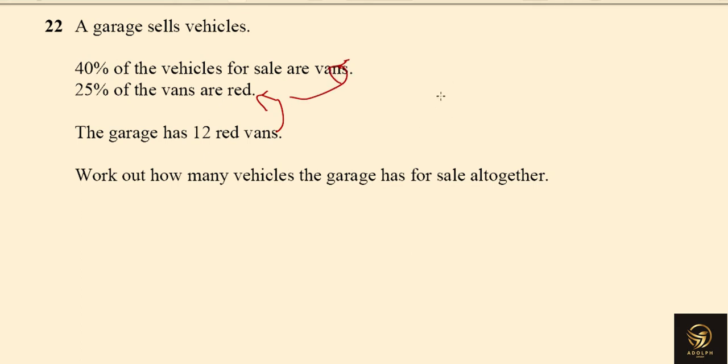If suppose they have given the vehicles in the garage, then we'll be multiplying 40% by 100 into the total number to get the vans, then again multiply by 25% to get the red vans. Since they gave the last value and are asking the previous values, what we have to do is multiply by the reciprocal of the percentage.